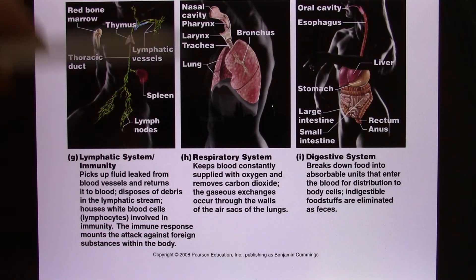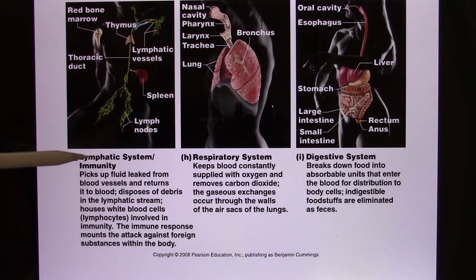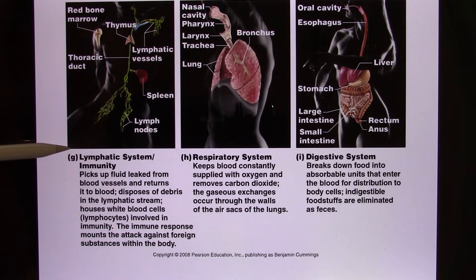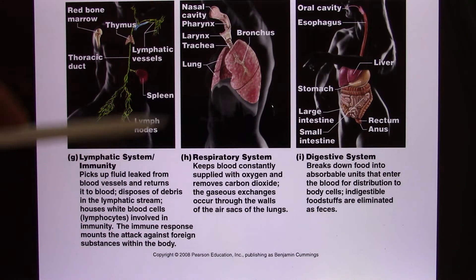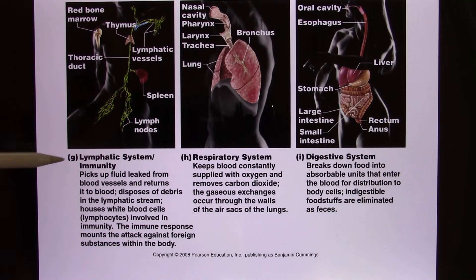The lymphatic system is one students are less familiar with. Its function is immune defense. You have a specific kind of white blood cell called lymphocytes — T lymphocytes, B lymphocytes, and natural killer cells — all belonging to the lymphatic system. They fight pathogens.